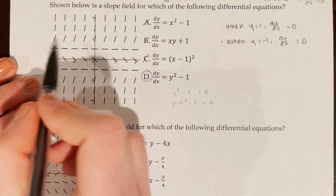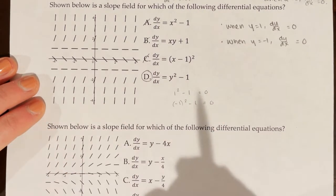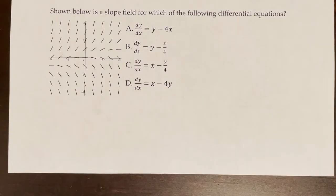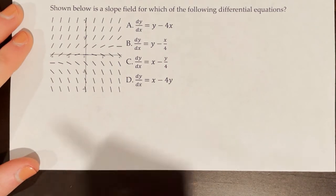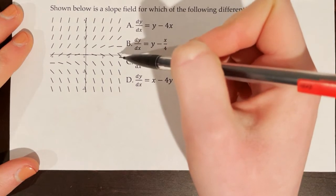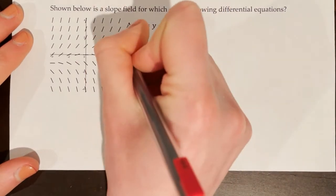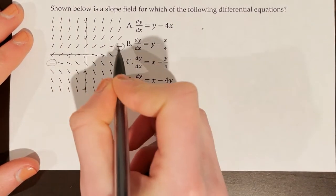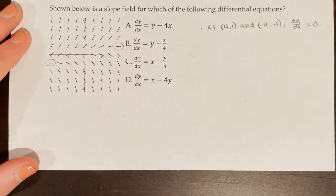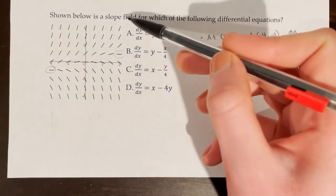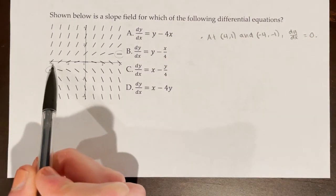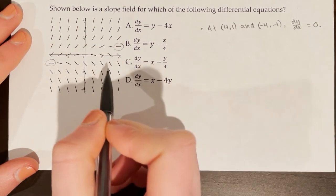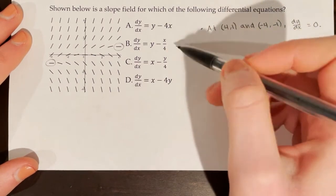For the next problem, the slope field is more challenging because there are no columns or rows where dy/dx is entirely undefined or entirely zero. We do see that dy/dx = 0 at (4, 1) and (-4, -1). As we go down each column or across each row, the tangent lines are changing, meaning both x and y affect dy/dx. This doesn't eliminate any choices since all four options contain both x and y.